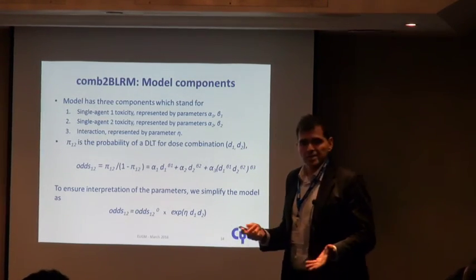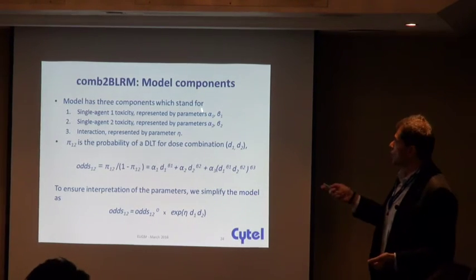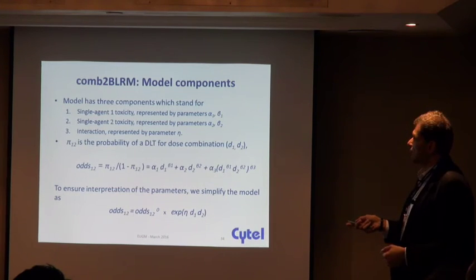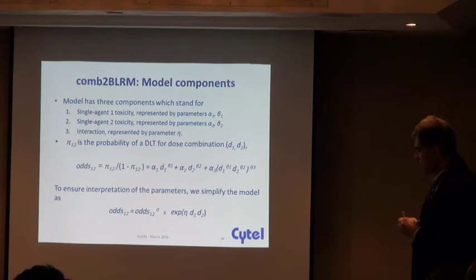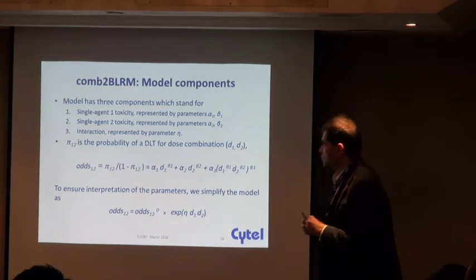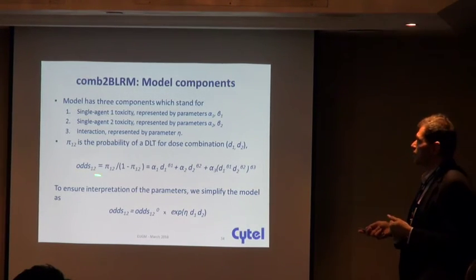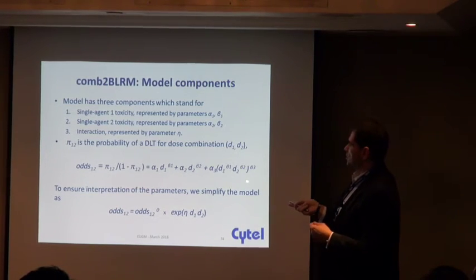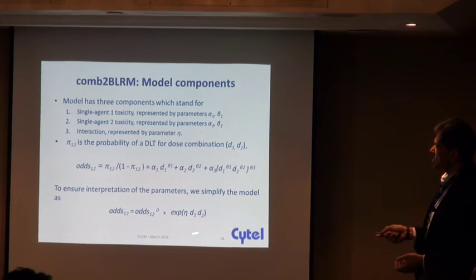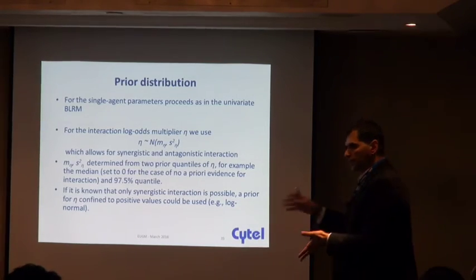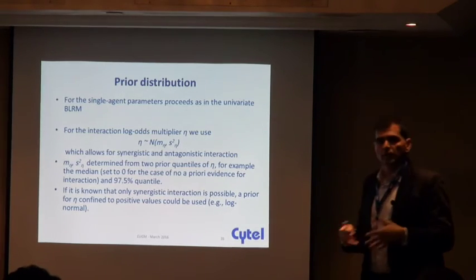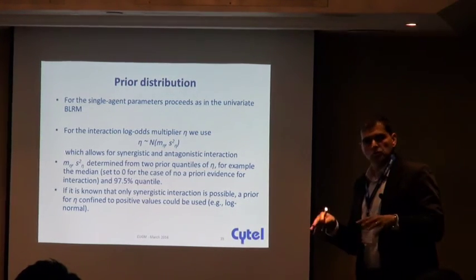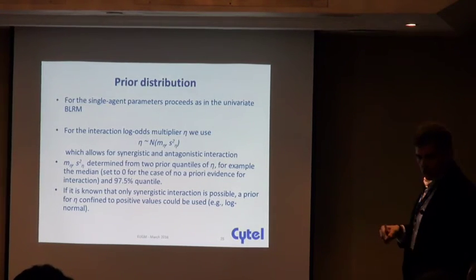For the BLRM combination approach, we use the BLRM model for each of the two agents plus an interaction term modeled by a normal distribution. Following Thall's treatment of combination agents, the odds of a DLT are written in terms of the first dose agent, a function of the second dose agent, and an interaction term. You extract the prior distribution for the interaction, enter it, and proceed as in BLRM — calculating the posterior distribution and the chance of falling into the targeted toxicity interval subject to the overdosing constraint.